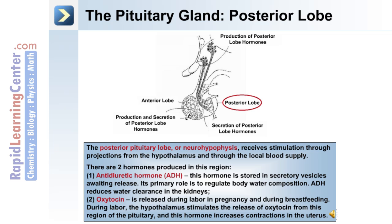Antidiuretic hormone, or ADH, is stored in secretory vesicles awaiting release. The primary role of ADH is to regulate body water composition by reducing water clearance in the kidneys. Oxytocin is released during labor, pregnancy, and breastfeeding. During labor, the hypothalamus stimulates the release of oxytocin, which increases contractions in the uterus.